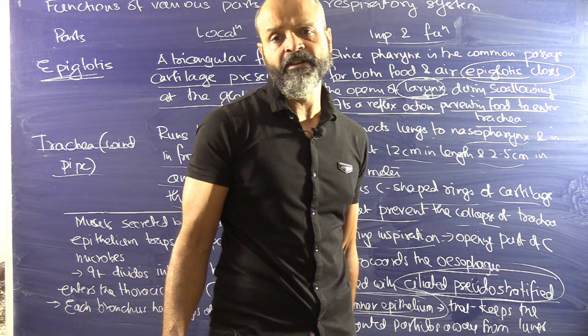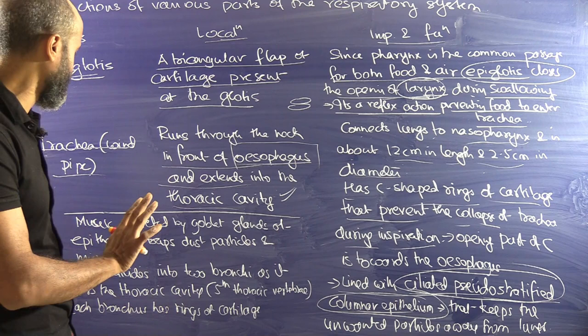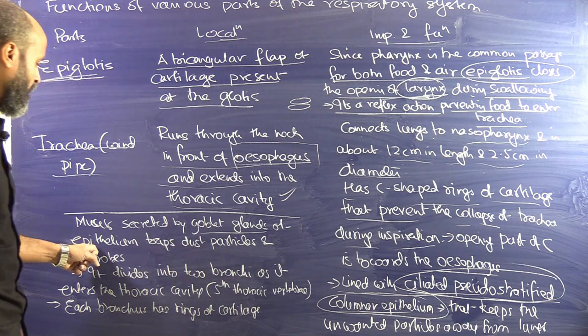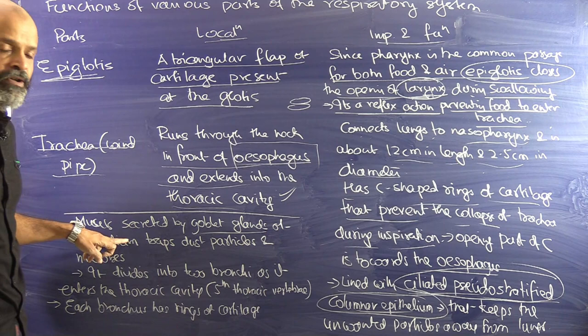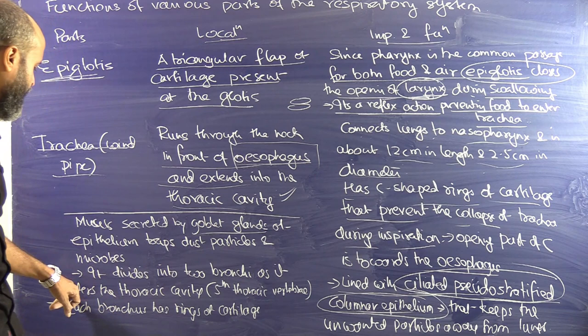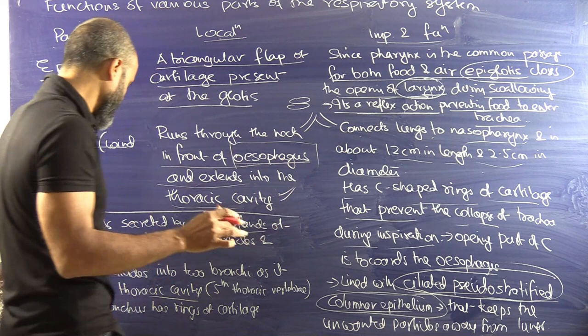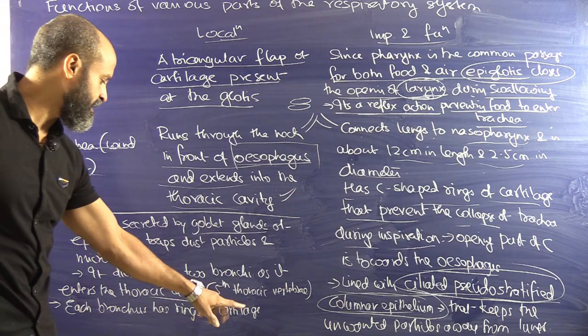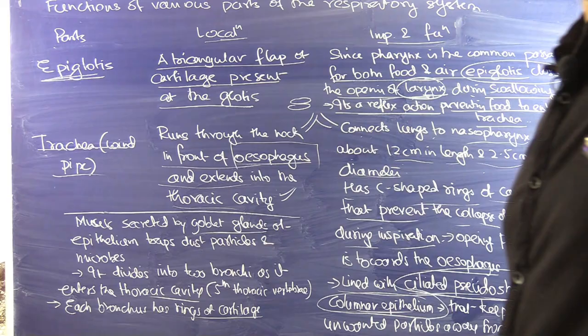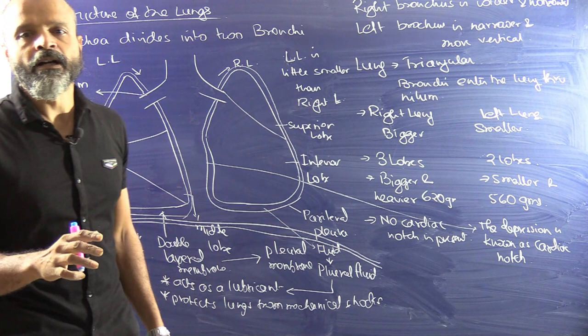The trachea is lined with ciliated pseudostratified columnar epithelium — very important. This keeps unwanted particles like dust and bacteria away from the lungs. The mucus secreted by goblet glands of the epithelium traps dust particles and microbes. The trachea divides into two bronchi as it enters the thoracic cavity, and each bronchus has rings of cartilage.